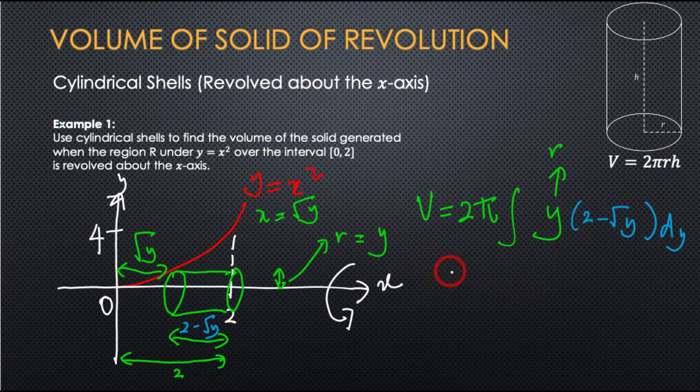If you solve this, you will get 32π over 5.